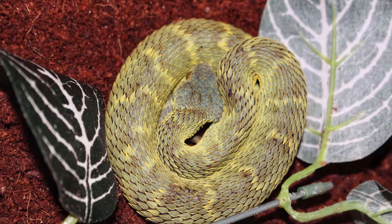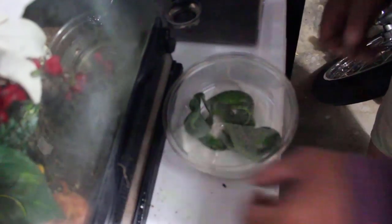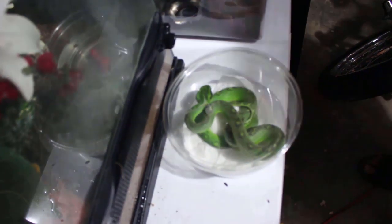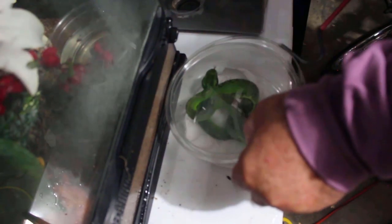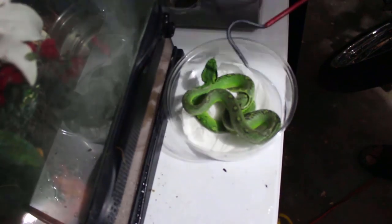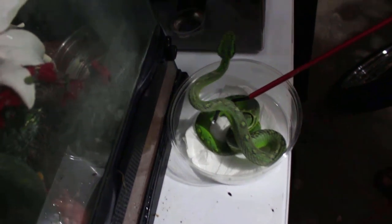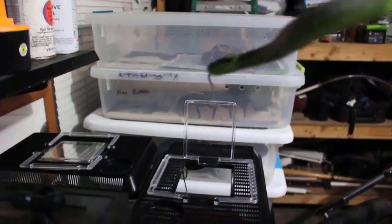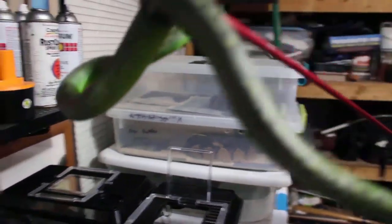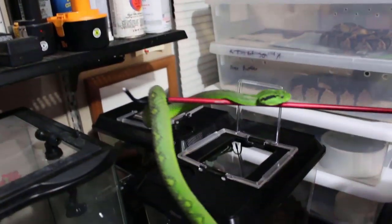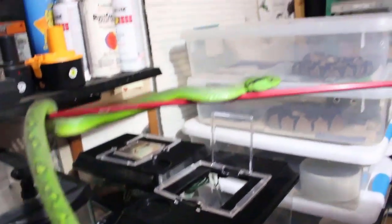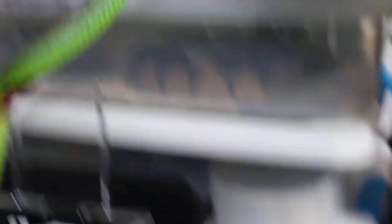This last snake we're going to work is Bothriecus aurifer, the yellow-blotched palm pit viper. Hopefully I got that right—I know the scientific name but not the common name. I wasn't expecting the specimen to be this big. We already had the tub set up, so we'll just put it in the tub and set up a different cage once we get those later this evening. He'll get moved twice today.